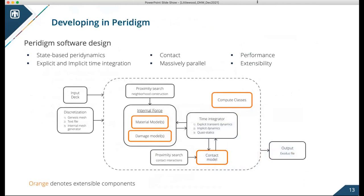In the last couple of minutes, I'll talk briefly about what it's like to develop in Paradigm. There's a schematic showing the software architecture. We knew there would be places where folks would want to do methods development, so we made those easily extensible — highlighted in orange. Obvious places include material models, damage models, and contact models. Compute classes is a feature that gives users access to all field data for general calculations, such as defining custom quantities of interest, computing internal energy, or computing neighborhood statistics, which can then be included in the output files.